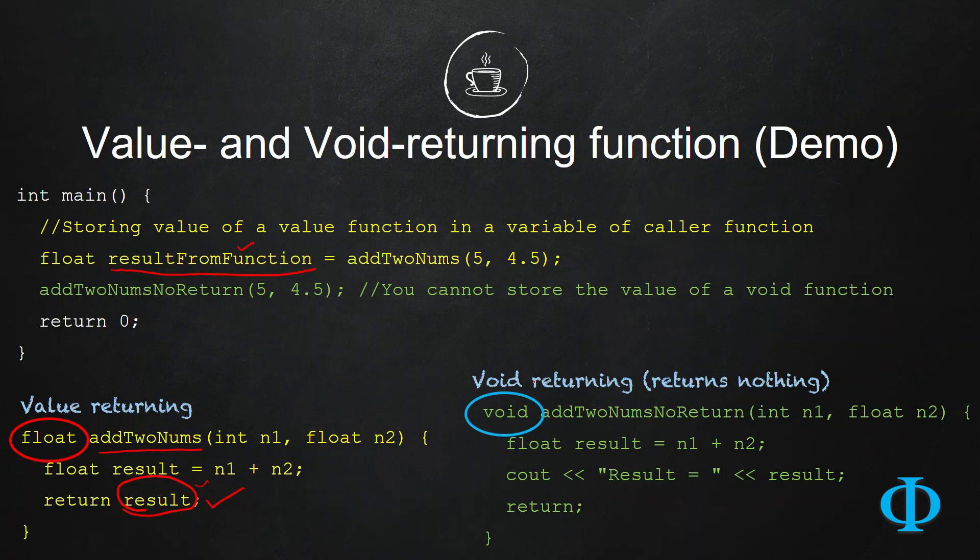But, in void returning function, it does not return anything. Just notice this line. I have just written return, but there is no value afterwards.